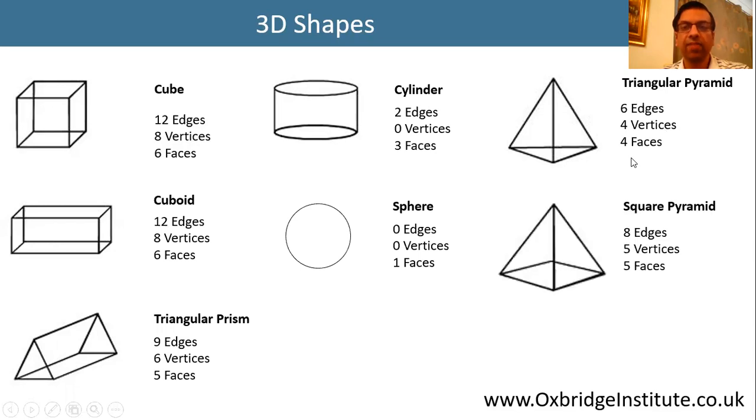And here we have a square pyramid with 8 edges, 5 vertices, and 6 faces.